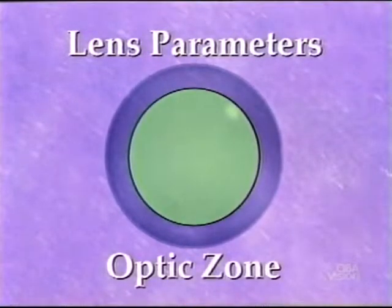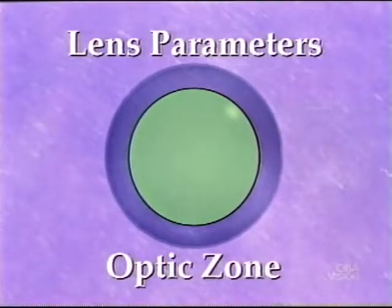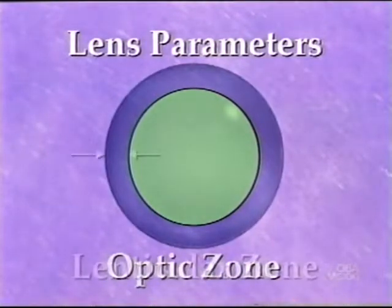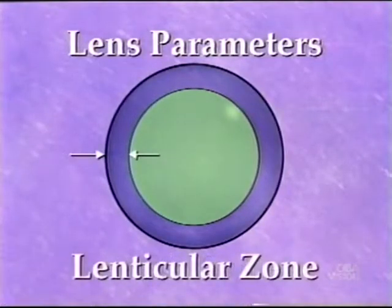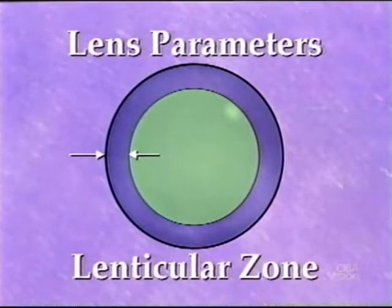The optic zone, which is located in the center, contains the usable optically powered portion of the contact lens. The area outside the optic zone is called the lenticular or carrier portion and is usually designed to decrease lens thickness and improve comfort.